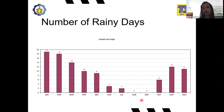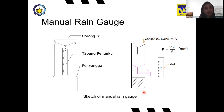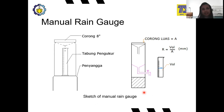To get all of that data, we need rain gauges. BMKG already uses the automatic type now. Manual rain gauges were used a long time ago. This is just for your knowledge so you can see the differences between the manual and automatic rain gauge.